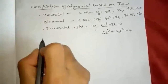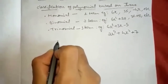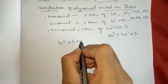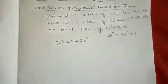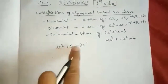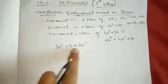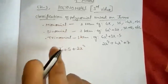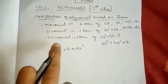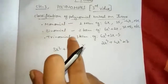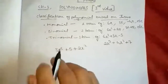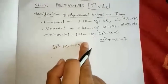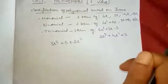Then what about this? 3x square plus 5 plus 2x square. What is this — monomial, binomial, or trinomial? You might say that there are three terms, so it is trinomial.